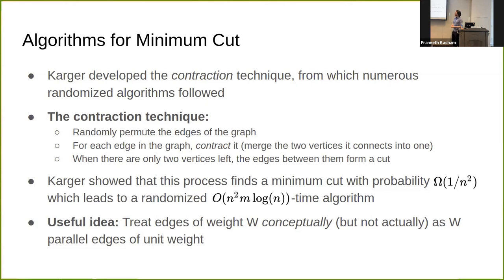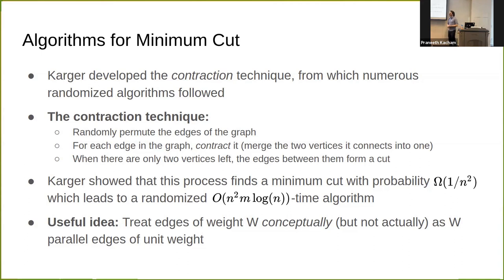Then Karger came along with a technique not based on maximum flows — a new technique called contraction. At its core, contracting an edge means taking an edge, looking at its two endpoints, and smushing them together into one vertex. The simplest contraction algorithm picks edges in a random order, contracts one edge at a time, joins the vertices at its endpoints, and keeps going until just two vertices remain. These two vertices correspond to a cut, and the edges between them are the edges that cross the cut. Karger shows that with probability at least 1/n², this gives you the minimum cut.